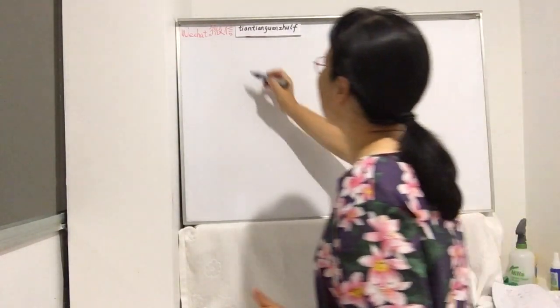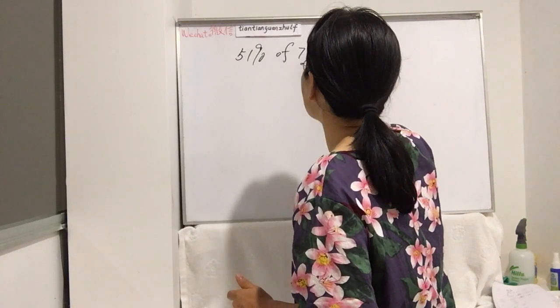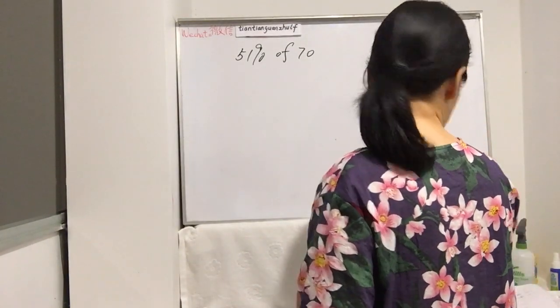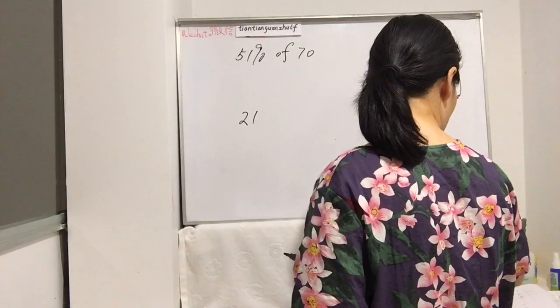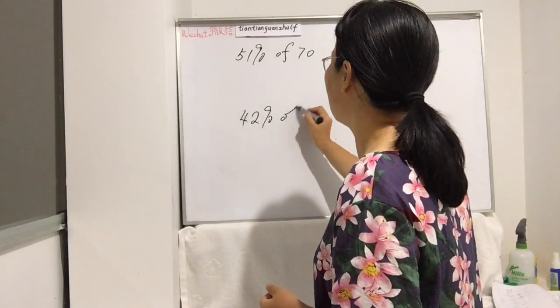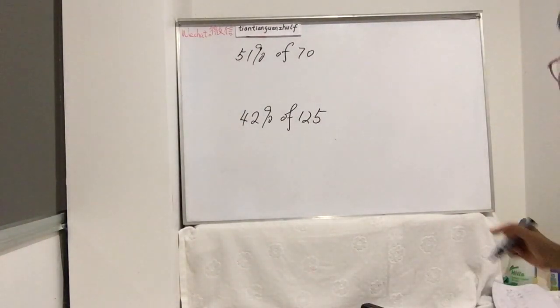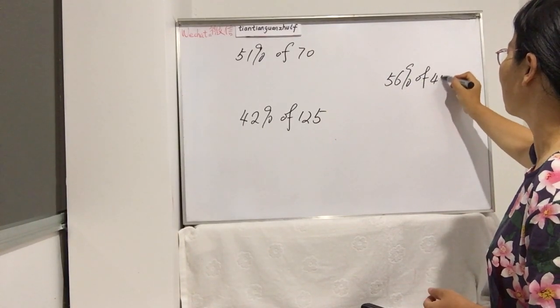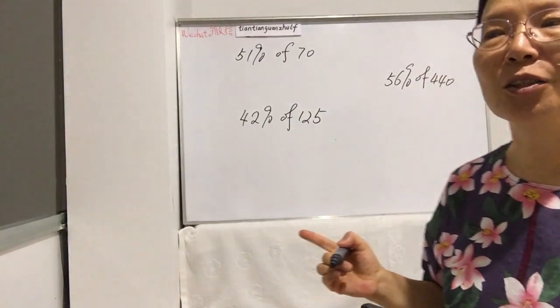Let's do it. 51% of 70, and the second one is 42% of 125, and the third one is a little bit difficult, 56% of 440.